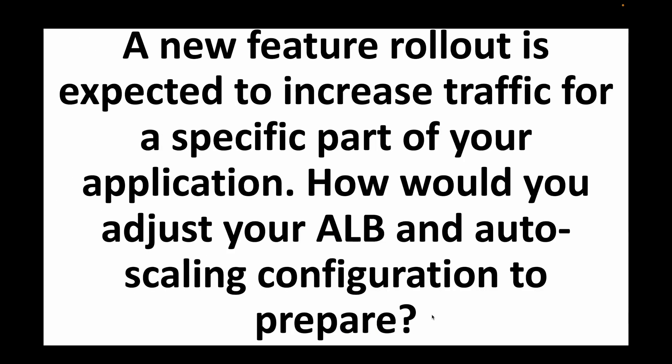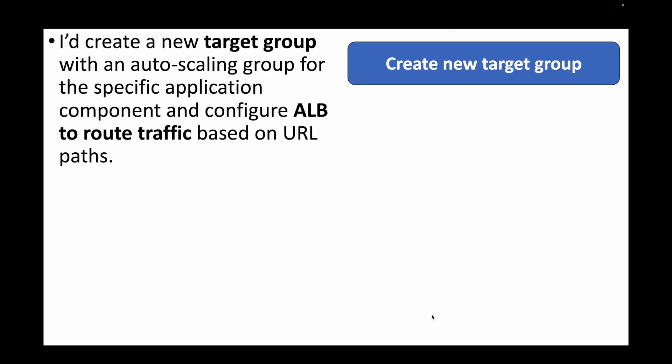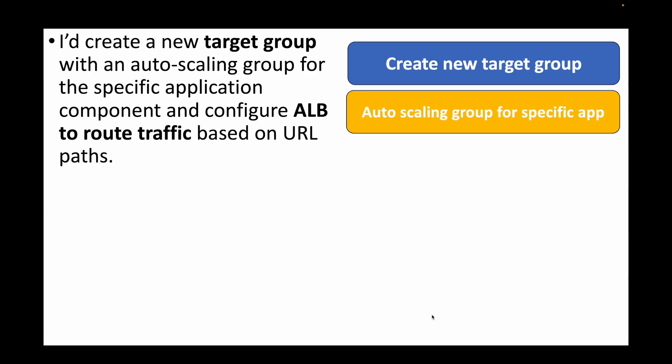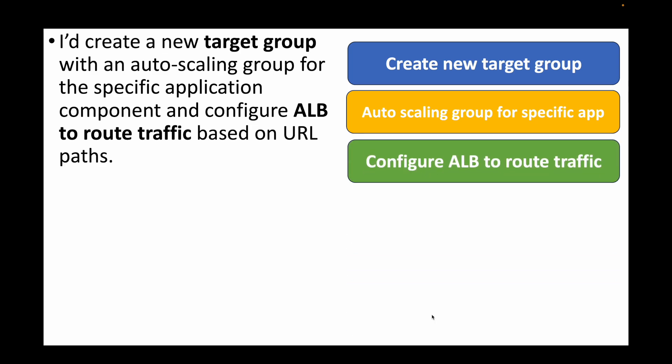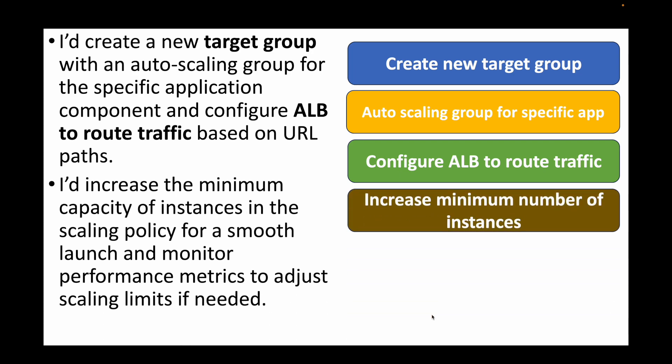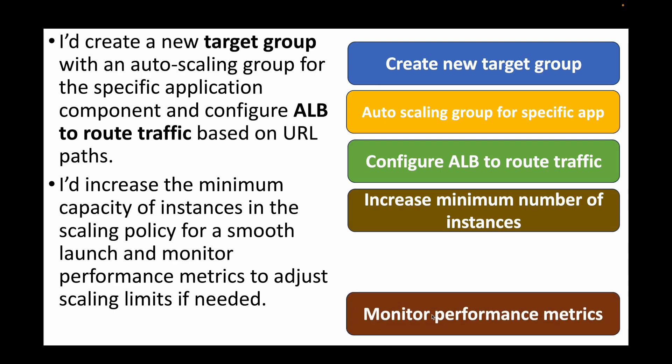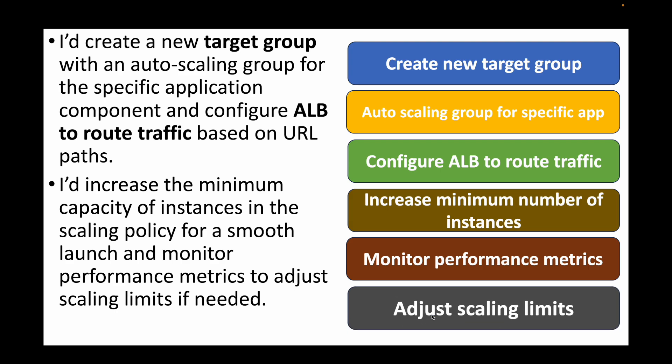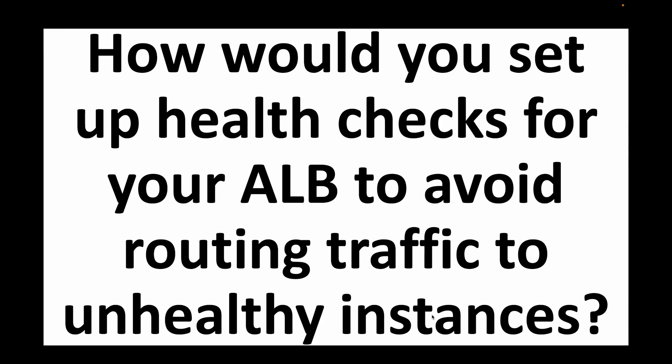The next question: a new feature rollout is expected to increase traffic for a specific part of your application — how would you adjust your ALB and auto scaling configurations to prepare? For this we can create a new target group with an auto scaling group, configure the ALB to route traffic based on URL path using path-based routing, increase the minimum number of instances in the auto scaling group, and monitor performance metrics to adjust instance counts accordingly.